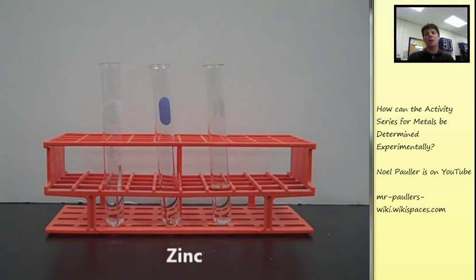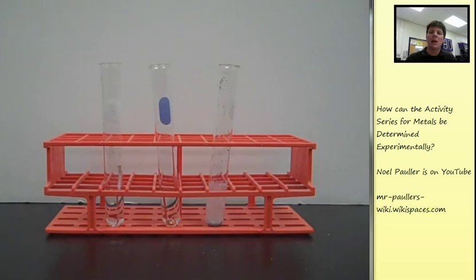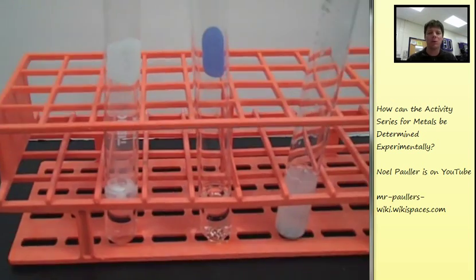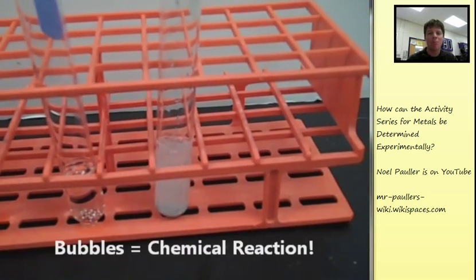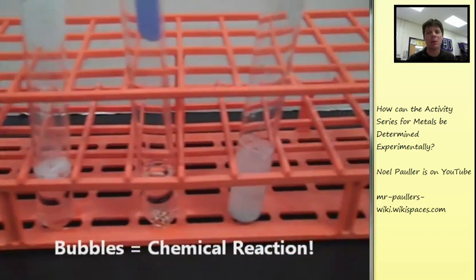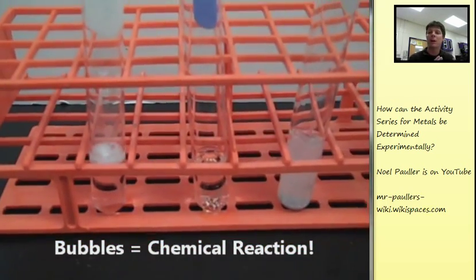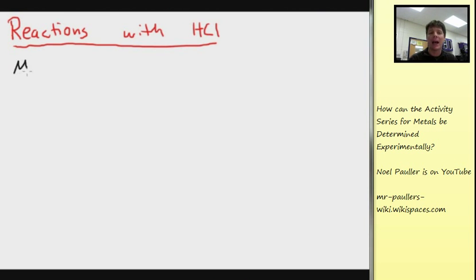Once again, in order to determine the activity series for these different metals, we really want to see when do they react, when don't they react. Taking a closer look here and using bubbles as an indication that a chemical change is happening, we can see that both the magnesium and the zinc are reacting.